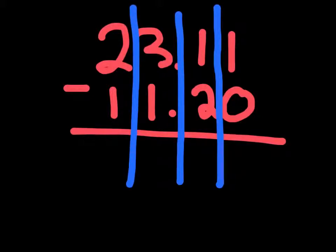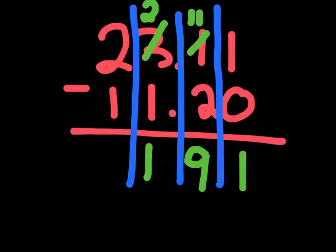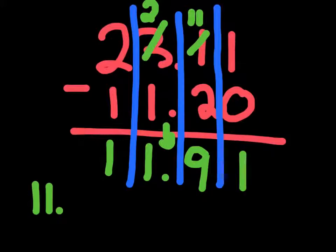So we know we can do 1 minus 0, so let's do that — 1 minus 0 is just 1. Then we have to do 1 minus 2, but we can't do that because 1 is smaller than 2. So we would have to borrow a number from the 3. The 3 becomes a 2 and the 1 becomes an 11. Now we can do 11 minus 2, and 11 minus 2 is just 9. Then we do 2 minus 1, which is 1. And then 2 minus 1 again, which is 1. Now we bring down our decimal point, so our answer to 23.11 minus 11.20 is 11.91.